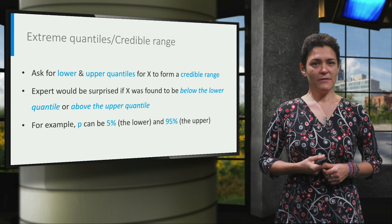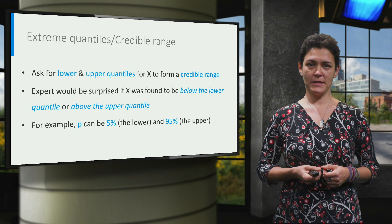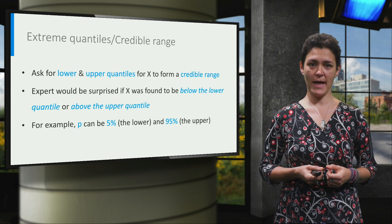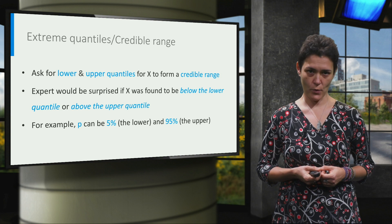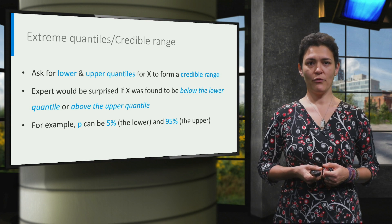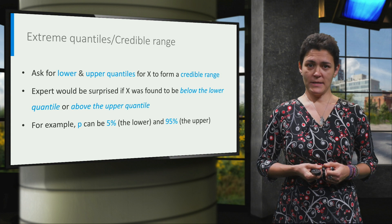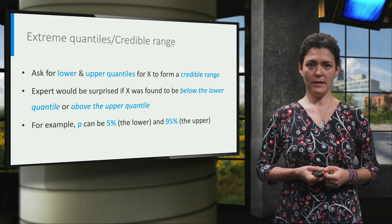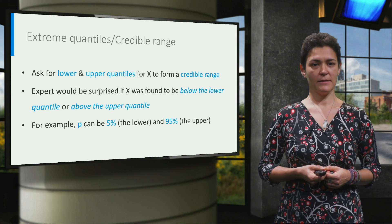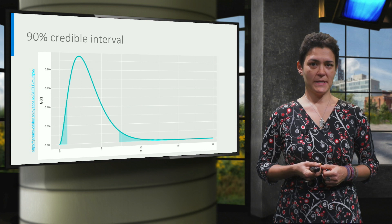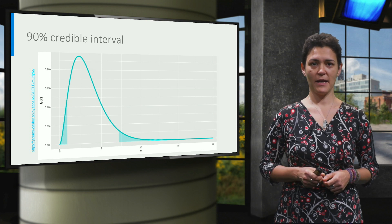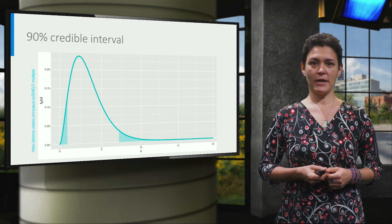However, the median value alone would not give us enough information to build an entire distribution. For this reason, we are going to ask for more quantiles and, to make sure we capture less central behavior of this variable, we are going to ask about more extreme quantiles. The simplest option is to ask for a lower quantile and an upper quantile, forming a credible range. We could, for instance, ask for the 5% quantile as the lower and the 95% quantile as the upper, obtaining a 90% credible interval. This means that the experts think there is still a 10% chance for the real value to fall outside the interval, namely in one of the two blue shaded areas of this graph.